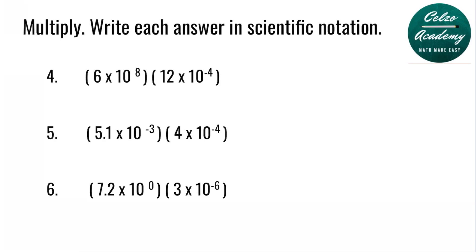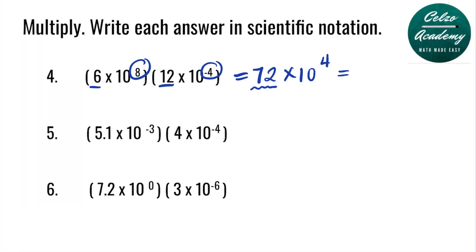Question number four: 6 times 10 to the power of 8, multiplied by 12 times 10 to the power of negative 4. Multiply the a values 6 and 12, which is 72. Then add the powers 8 and negative 4, giving 10 to the power of positive 4. Since the a value of 72 is more than 10, we rewrite it as 7.2, and the power increases by 1. The final answer is 7.2 times 10 to the power of 5.